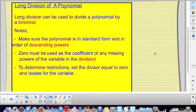Zero must be used as the coefficient of any missing powers of the variable in the dividend. For example, you're not going to always have x cubed and then an x squared and then an x and then a constant. Some of those variables may be missing, and if they are missing, we must let zero stand in its place. To determine restrictions, set the divisor equal to zero and isolate for the variable.